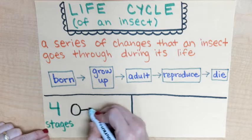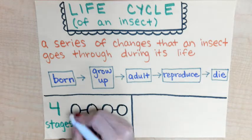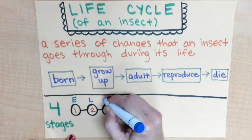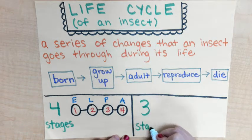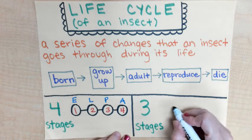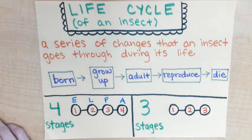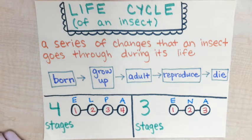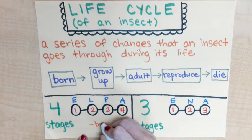I'll go over these later, I promise. An example of an insect that goes through four stages would be maybe a bumblebee or a butterfly. And then there is the life cycle that only has three stages. The first stage would be E for egg, N for nymph, and A for adult. I'll go over these as well later on. An example of an insect that goes through three stages would be maybe a dragonfly or a grasshopper.